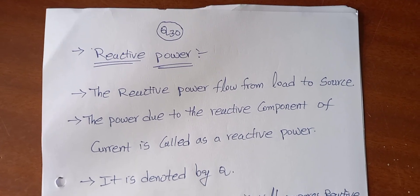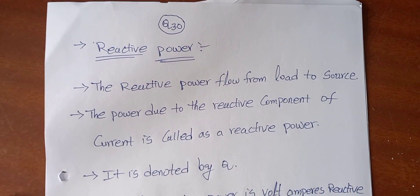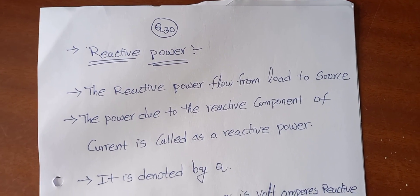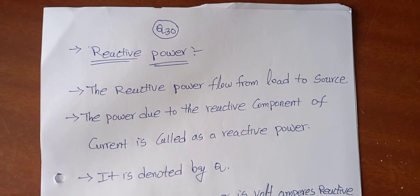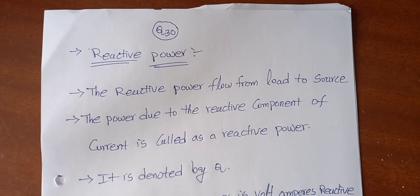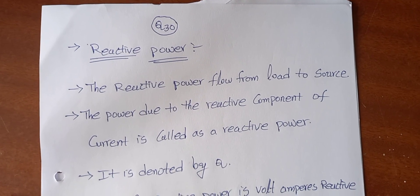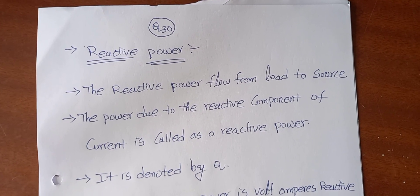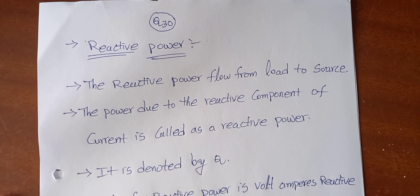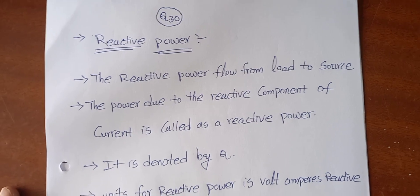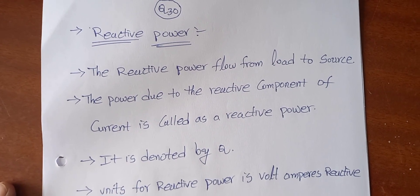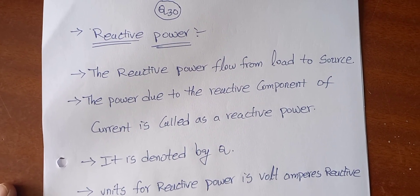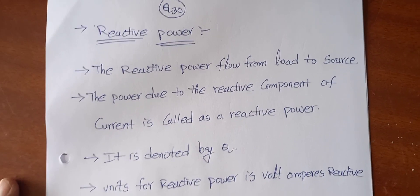Due to these reactive components, the power will be generated. That power flows from load to source — so it means the reactive power flows from load to source. That one is reactive power. The power due to reactive components of current is called reactive power.